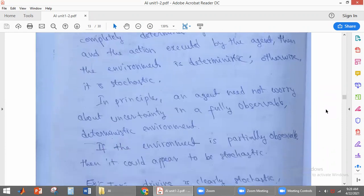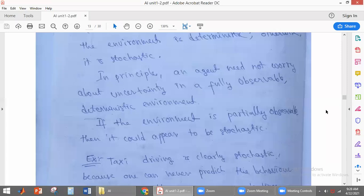Otherwise, that is called stochastic. For example, if the agent is in a completely observable deterministic environment, it need not worry about uncertainties because it is fully observable and the next state of the environment can also be predicted. So the agent need not worry about the uncertainties in that case.